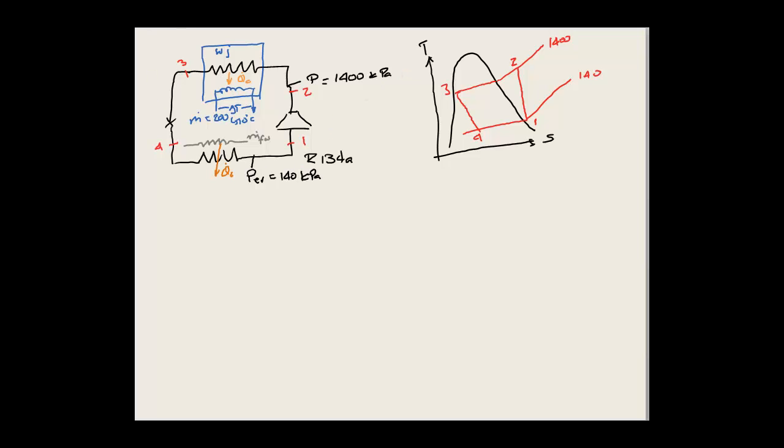What we are looking for is the hardware and the T-S diagram, which we've already drawn. We need to find the mass flow rate of refrigerant and the mass flow rate of fresh water.